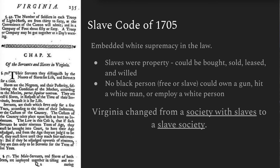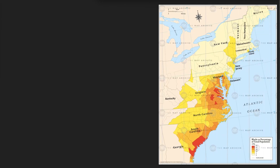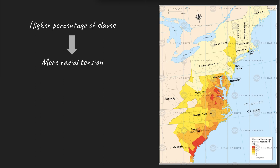This was a key turning point for the South. When we look at which colonies had slave codes, what we can see is that the higher percentage of slaves in a colony, the more racial tension there was, and the more slave codes were therefore put in place. And whenever there were more slave codes put in place, there were more rebellions.